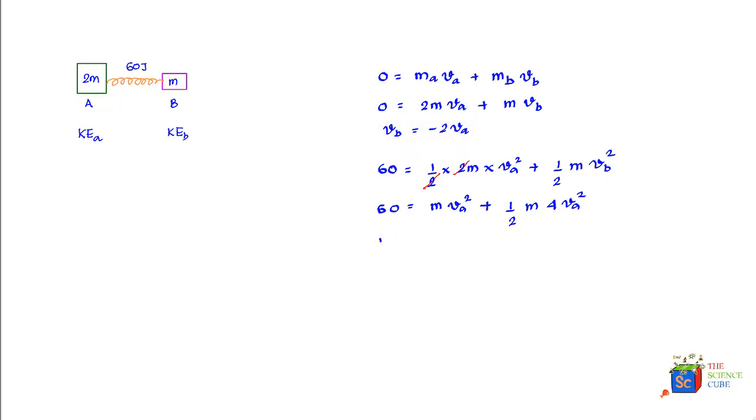Kinetic energy of mass A is given as half into m, which is 2m, into va^2, which equals m*va^2. We've just calculated m*va^2 is 20, so we can say that kinetic energy of mass A is equal to 20 joules.